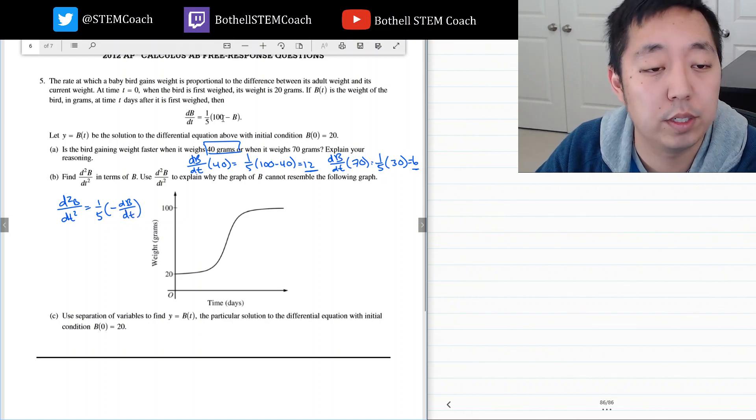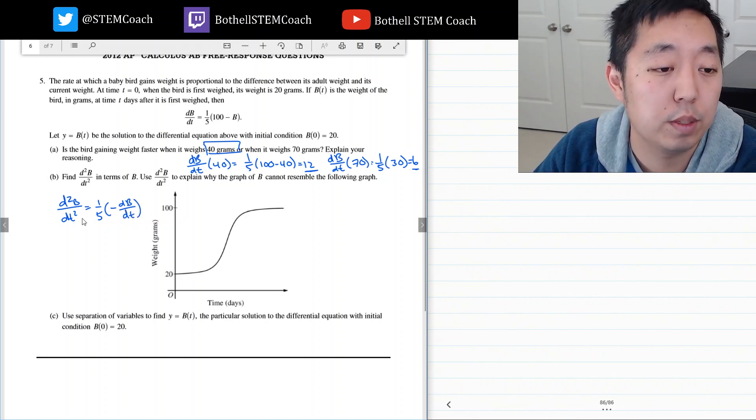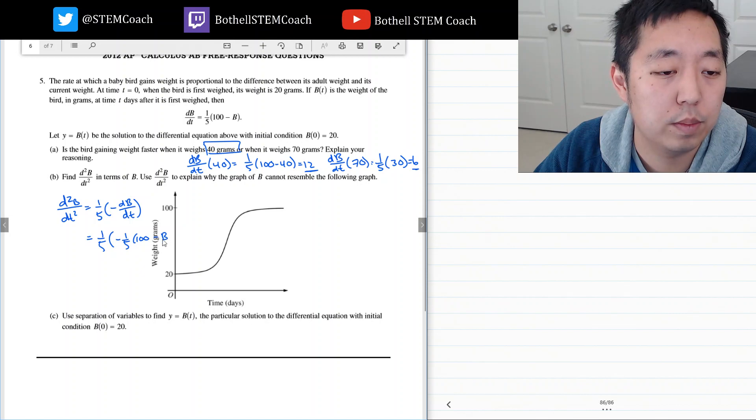Right, because the derivative of 100 is 0 and derivative of negative b is negative db/dt. But I want it in terms of b. This is one-fifth, negative db/dt is just negative this, so it's negative one-fifth times 100 minus b. So this is negative 1 over 25 times 100 minus b.